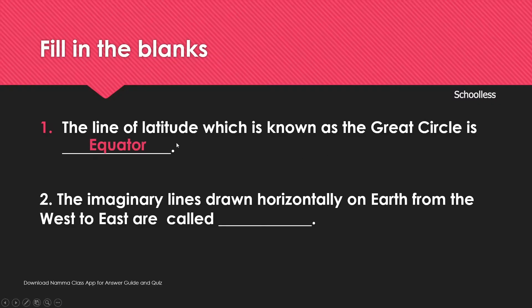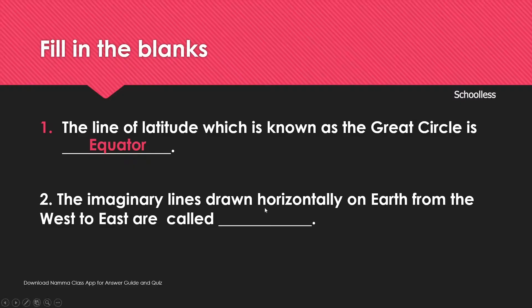The equator is the latitude line that runs horizontally and is called the great circle. The imaginary lines drawn horizontally on Earth from west to east are called lines of latitude. Vertical lines running north to south are lines of longitude.